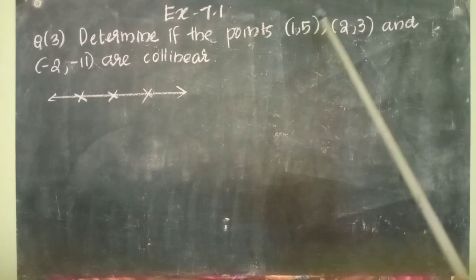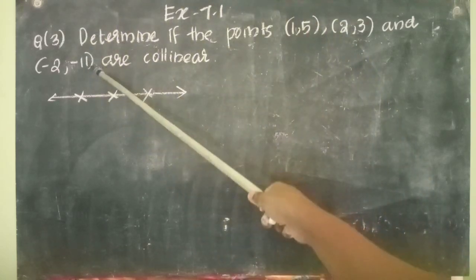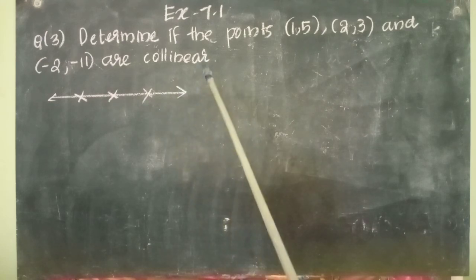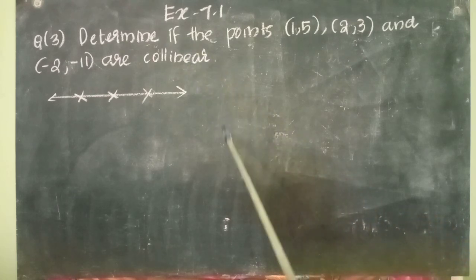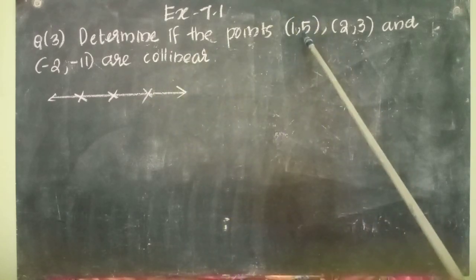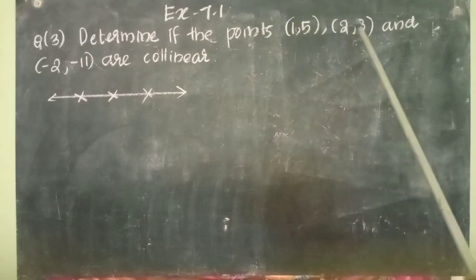So, let us find out the area of triangle in this case. If the area of triangle equals 0, we can say the points are collinear. Otherwise, they are not collinear. So, let us find out the area of triangle formed by these 3 points.